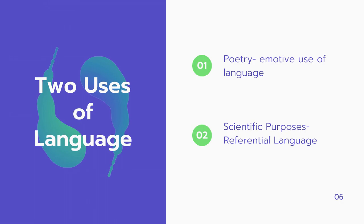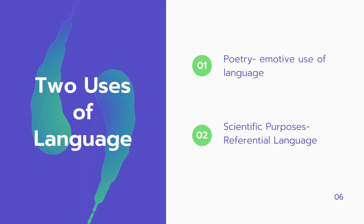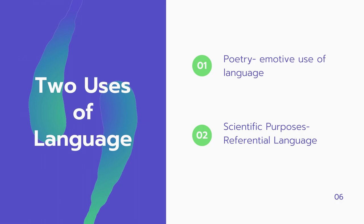Poetry, according to IA Richards, can never be written using scientific or referential language — the emotive use of language is employed in poetry. The referential use of language is used for scientific purposes; therefore it is a matter of fact and is characterized by the absence of fiction. In criticism as well, IA Richards says we could use scientific language. Thus, IA Richards differentiates between the scientific and the emotive use of language.